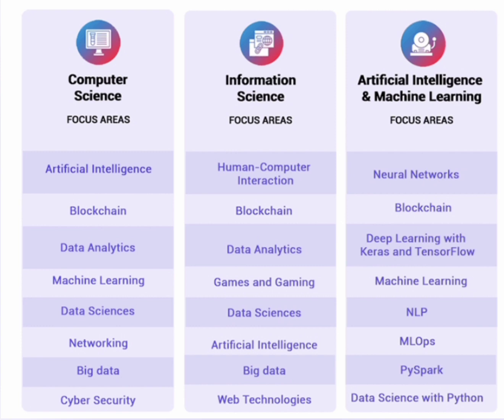So the biggest difference is that networking is in computer science but not in the other two branches. In information science, instead of networking, there is web technologies — that is the key difference. Web technologies and application development and maintenance are the focus areas of information science. In AIML, what replaces hardware networking is neural networks and deep learning, rather than physical hardware connection networking.